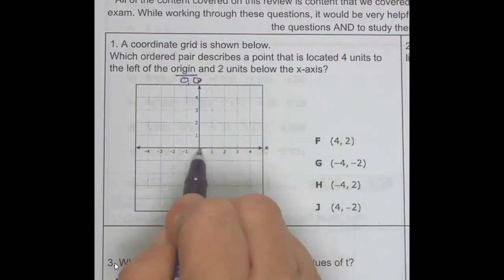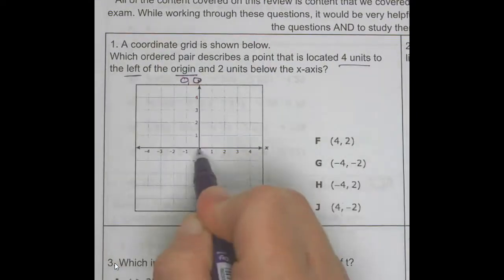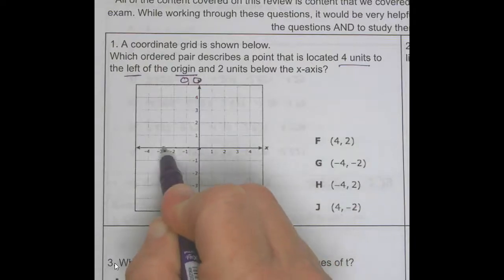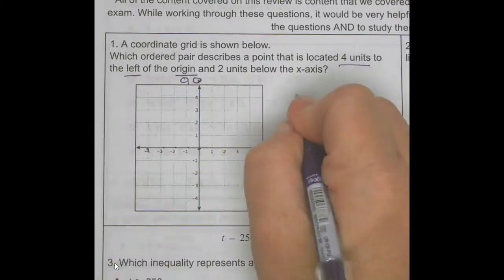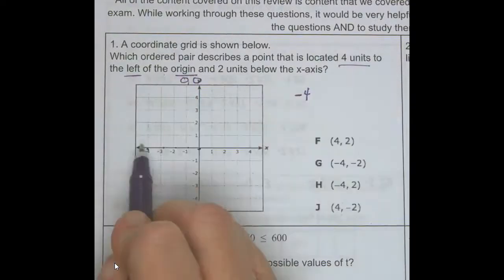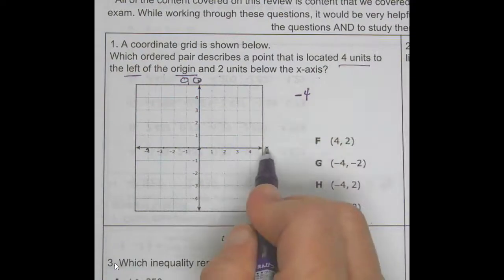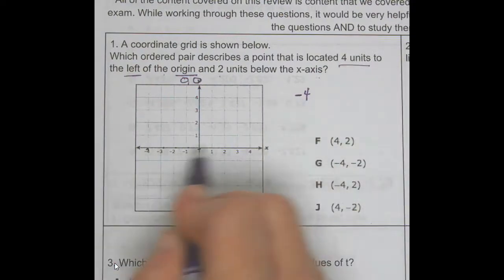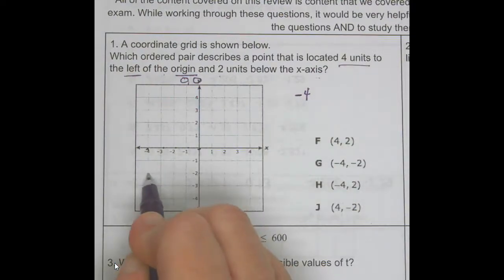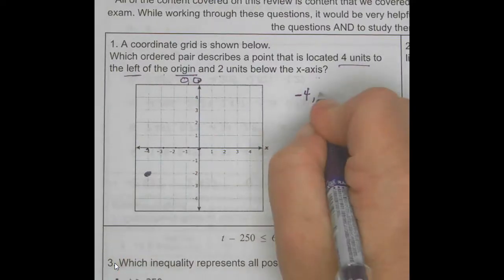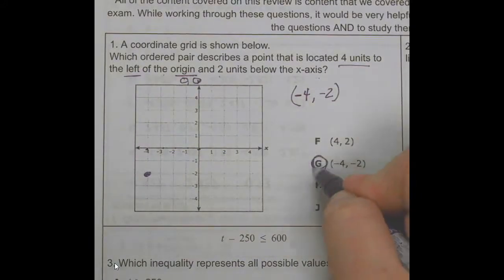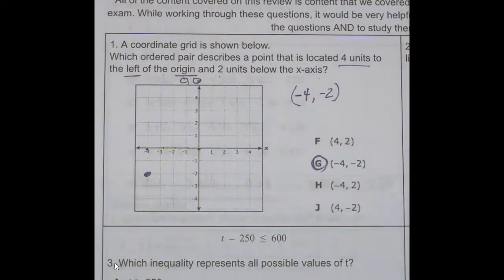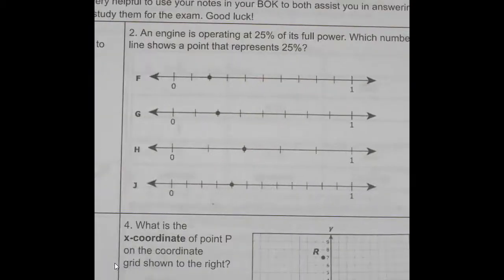I'm going to go four units to the left: one, two, three, four — that gives me negative four. Then I'm going to go two units below the x-axis — this is the x-axis — one, two, and this is at negative two. So my coordinate is negative four, negative two, which is answer G. Number two.